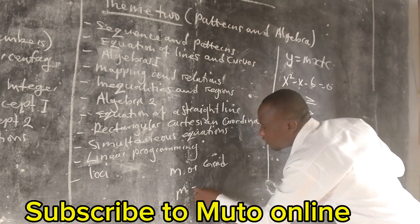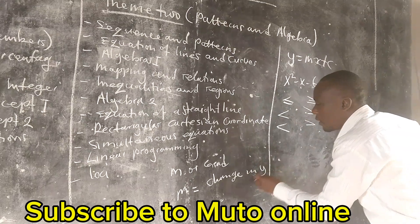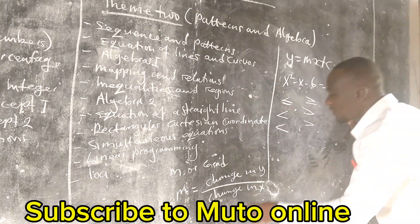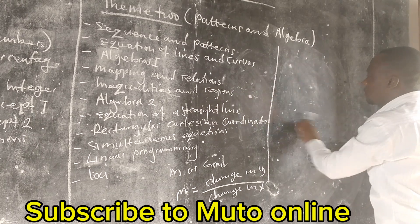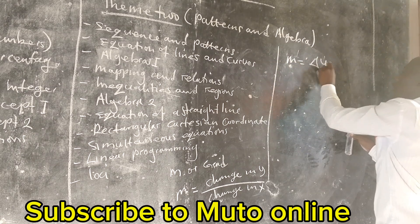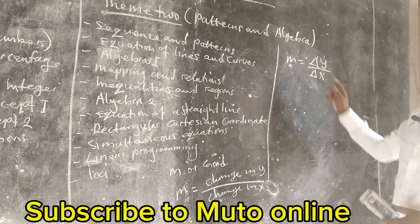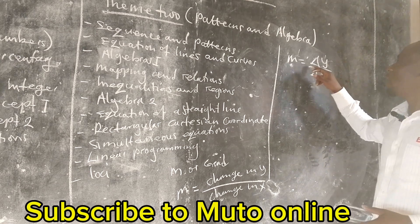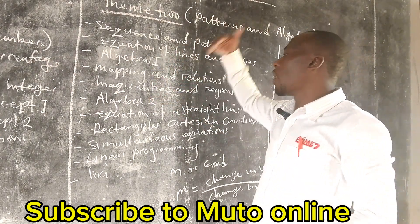Gradient can be summarized as m is equal to change in y over change in x. Don't say that this is a triangle — this symbol represents a change: change in y over change in x. That is what we are going to do with that topic as we come ahead.